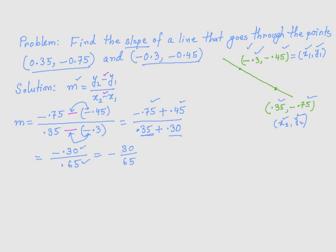Now, 5 goes into 30 six times and 5 goes into 65 thirteen times. So your slope is going to be negative 6 over 13. M equals negative 6 over 13.